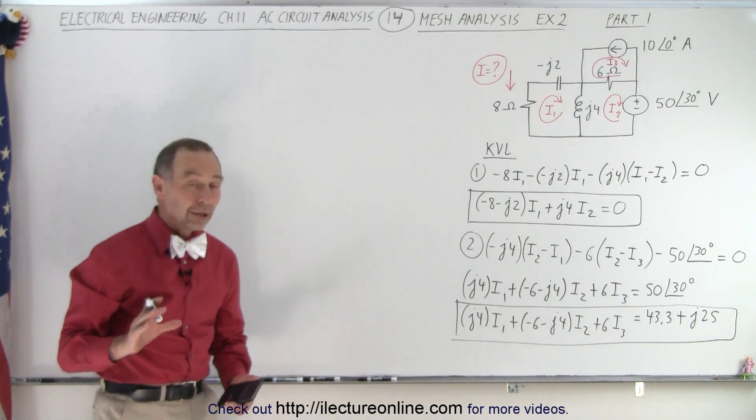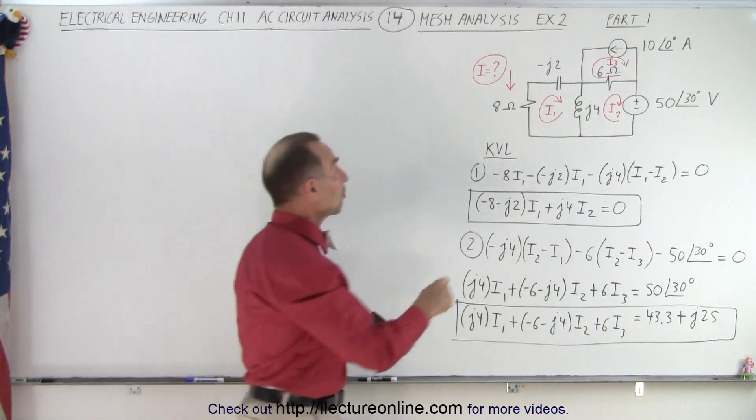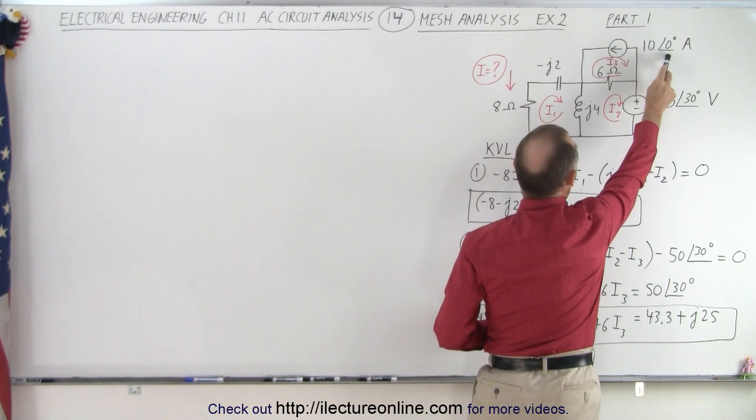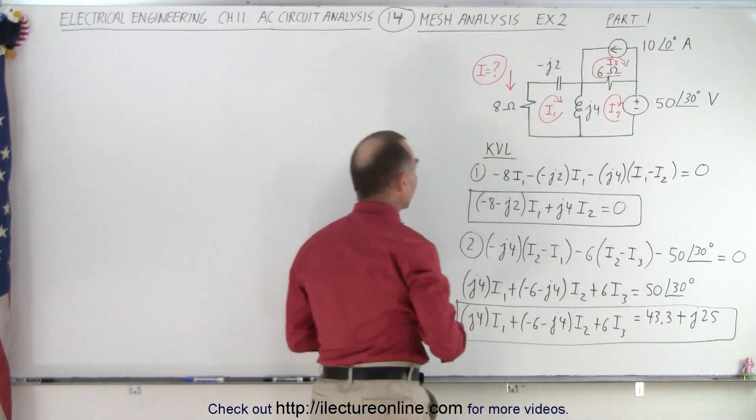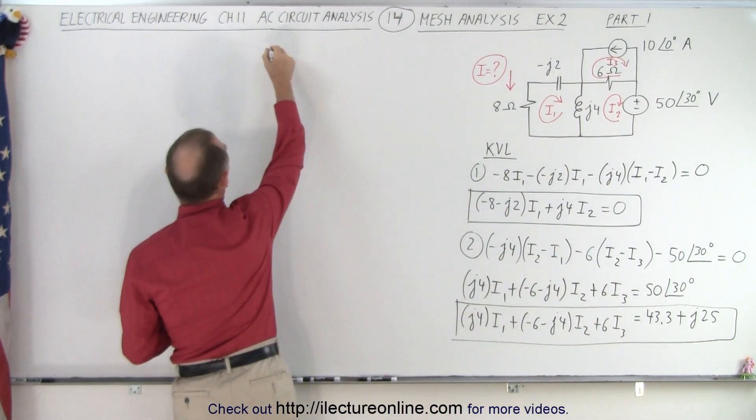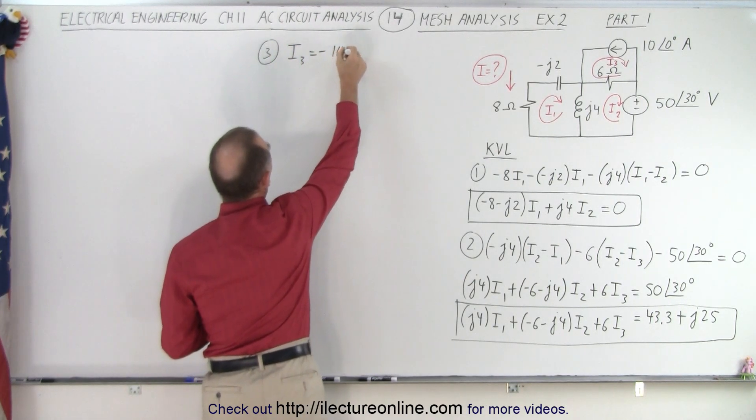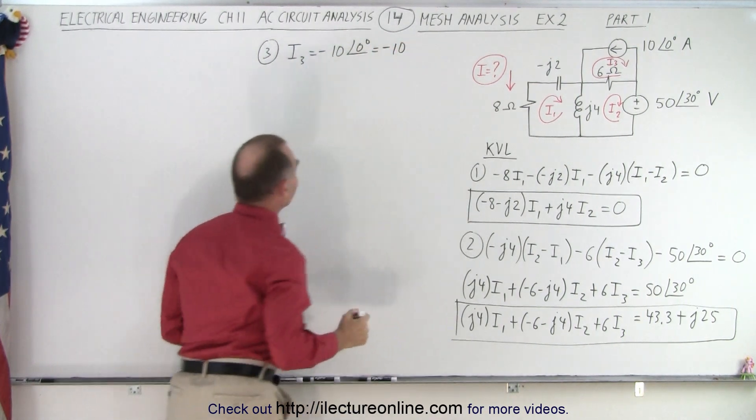Okay, now we need a third equation, mesh three. But there we have a current source, so it's driving current in this direction, 10 amps with a zero degrees phase angle, and it's in the opposite direction of I3. So for the third equation we can simply say that I3 equals a minus 10 with a phase angle of zero degrees, which is simply minus 10.